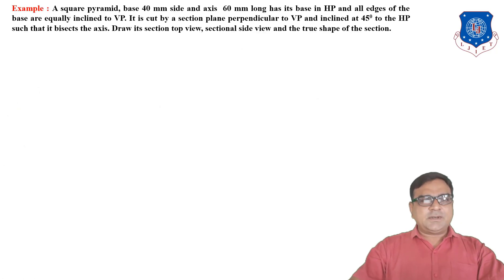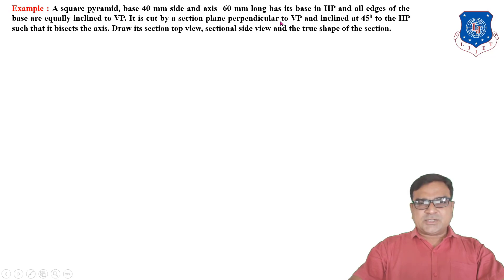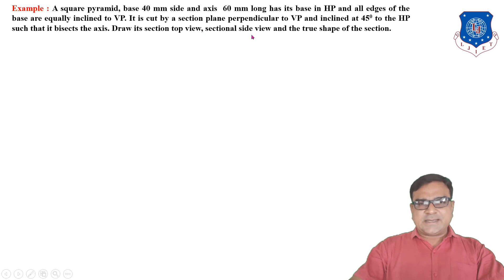Now let us see an example regarding section of solids. A square pyramid with base 40 mm side and axis 60 mm long has its base in edge view and all edges of the base are equally inclined to VP. It is cut by a sectional plane perpendicular to VP and inclined 45 degrees to HP such that it bisects the axis. Draw its sectional top view, sectional side view, and the true shape of the section.